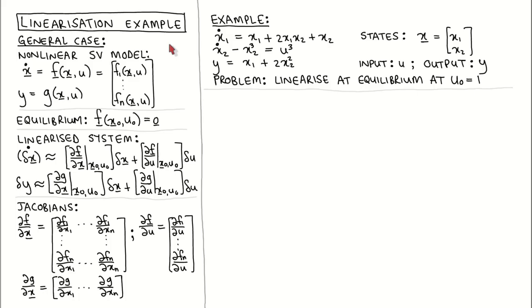The general linearization case that we discussed in a previous video is shown here on the left. Let's do a quick recap. This is the nonlinear state equation and this is the nonlinear output equation. For this module, we only look at linearization at an equilibrium point, which is defined as the states x0 and input u0 for which there is no change in state.